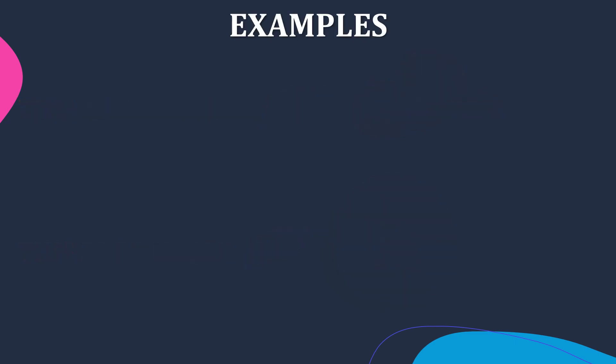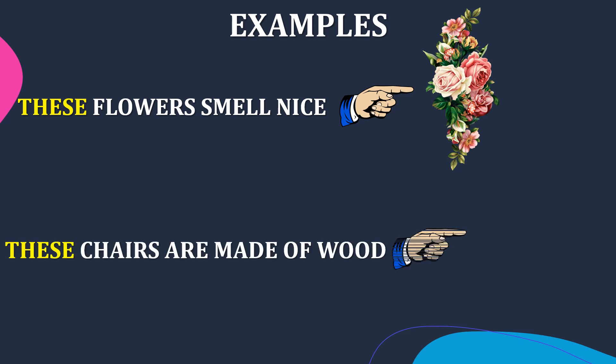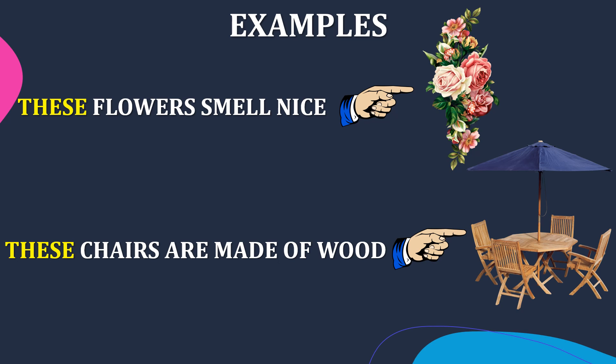The next example: 'These flowers smell nice.' 'These chairs are made of wood.' Here you are talking about plural nouns — flowers and chairs — and they are nearer to you. So we use the adjective 'these' here. These flowers smell nice. These chairs are made of wood.